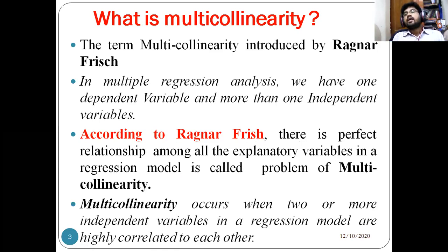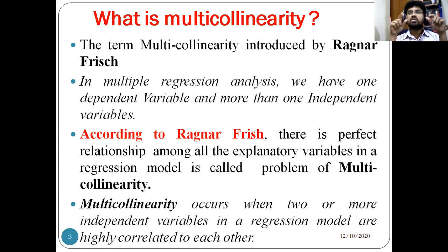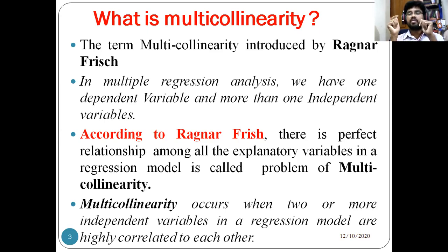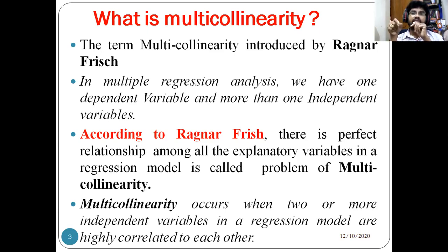Please keep in mind that, as per Ragnar Frisch, if there is a perfect relationship between the explanatory variables or independent variables, it is called multicollinearity. For example, in a multiple regression equation y = β₀ + β₁x₁ + β₂x₂ + β₃x₃, where x₁, x₂, x₃ are the independent variables — when there is a perfect relationship between x₁ and x₂, x₂ and x₃, or x₁ and x₃, that is called multicollinearity.